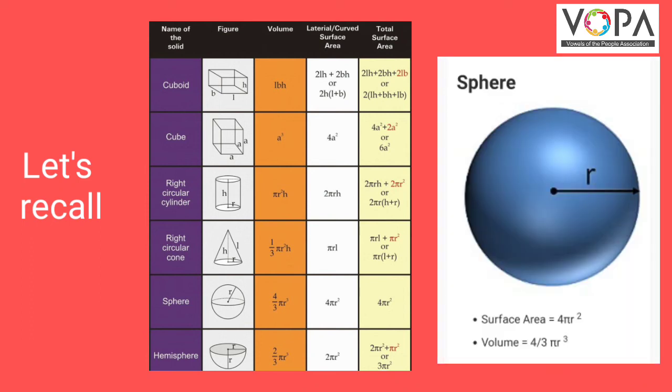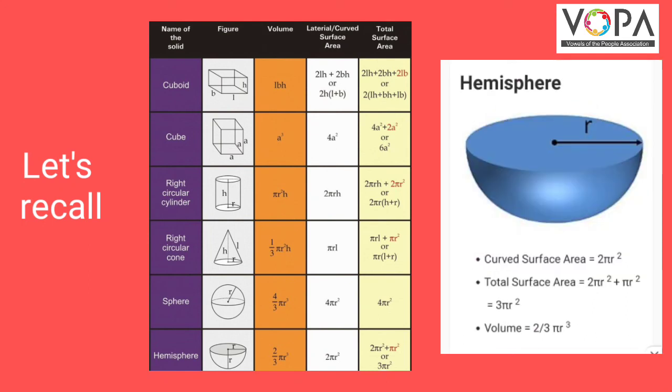A sphere has radius r. Its surface area is equal to 4πr², and volume is equal to (4/3)πr³.